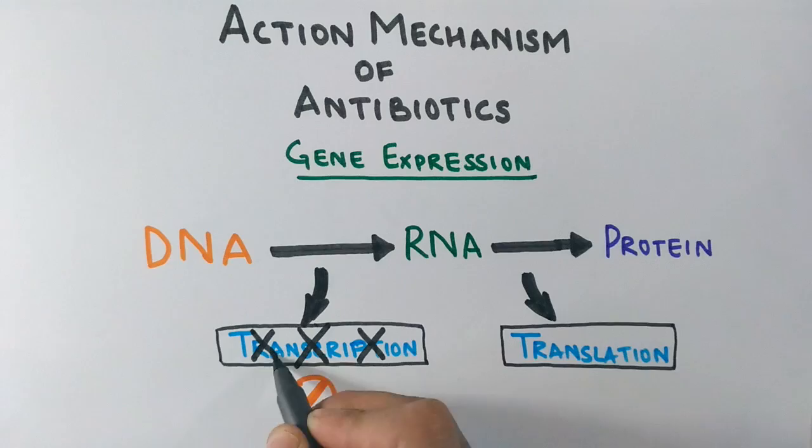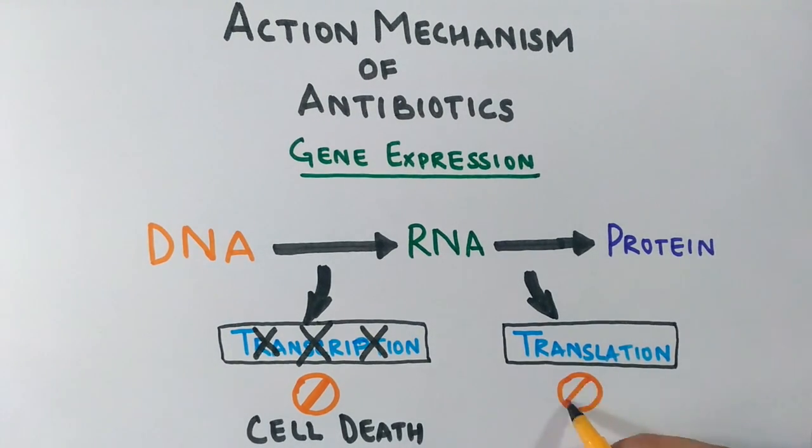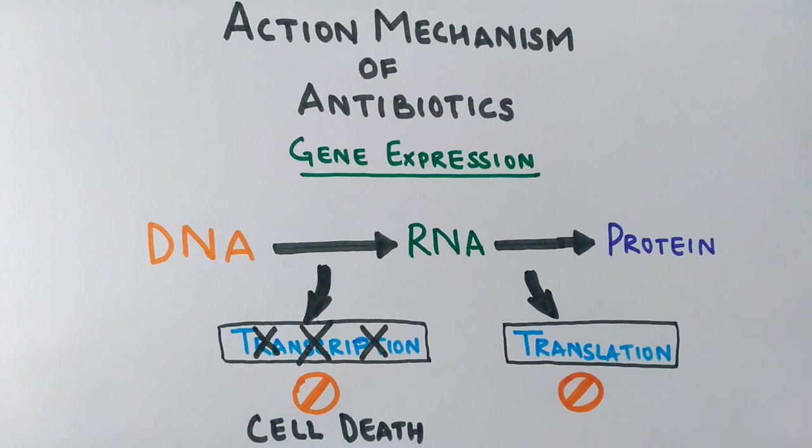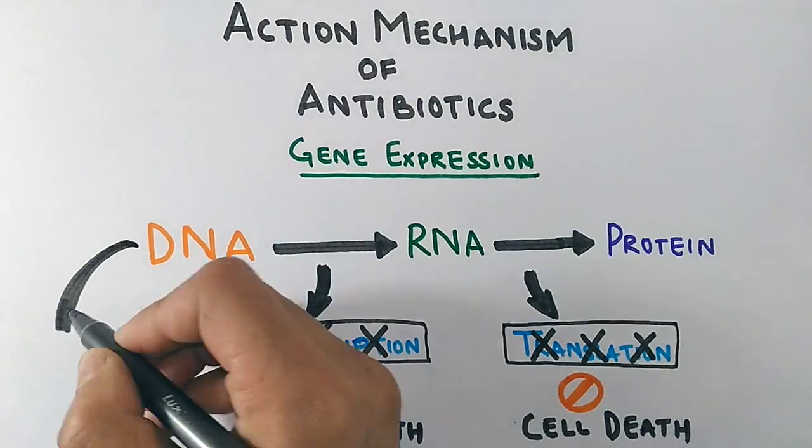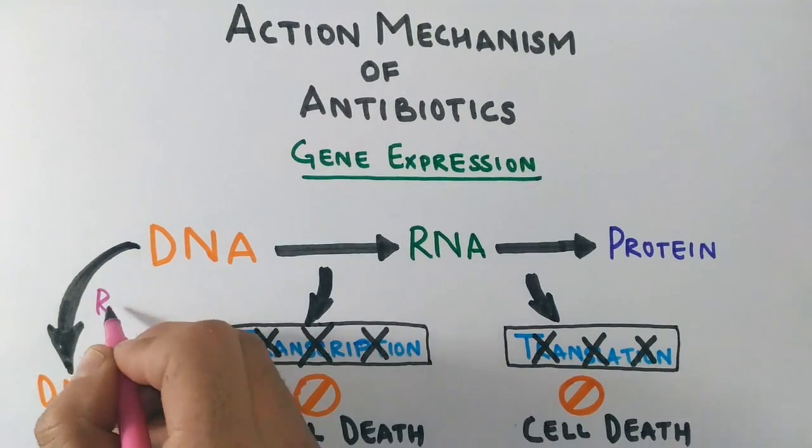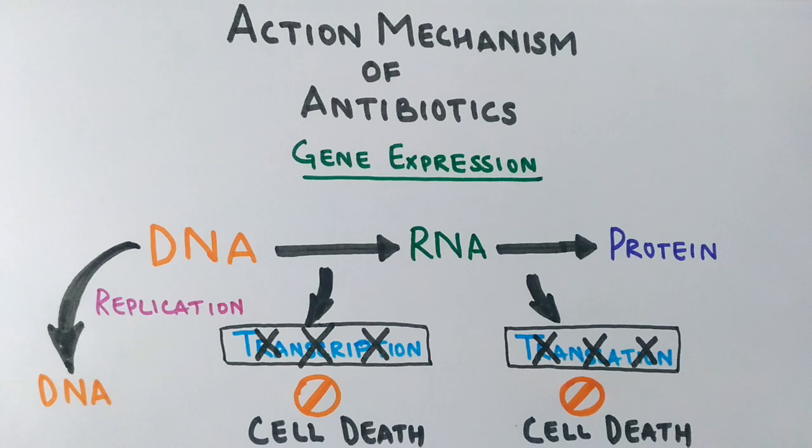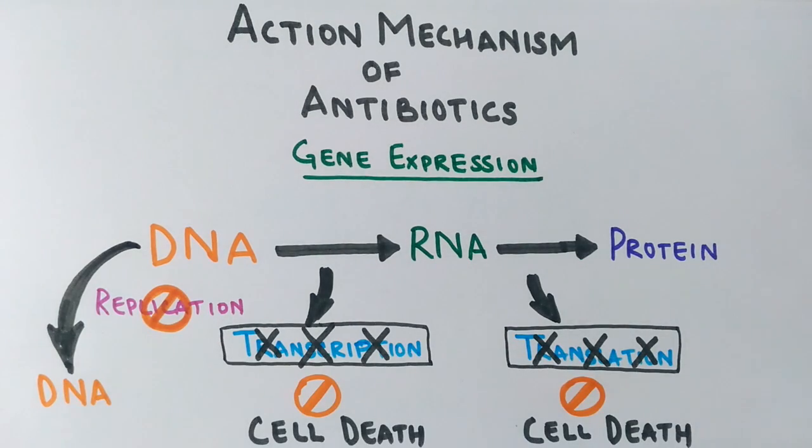Where there is no transcription, cell death occurs. They also target the translation process. When there is no protein making in bacteria, the bacterial cell dies off. Not only these processes get halted, but there is another process where a DNA molecule copies itself in another DNA molecule, and this process we call replication or DNA replication. The antibiotics also target this process so that DNA molecule is not able to make another DNA molecule when cell division occurs.